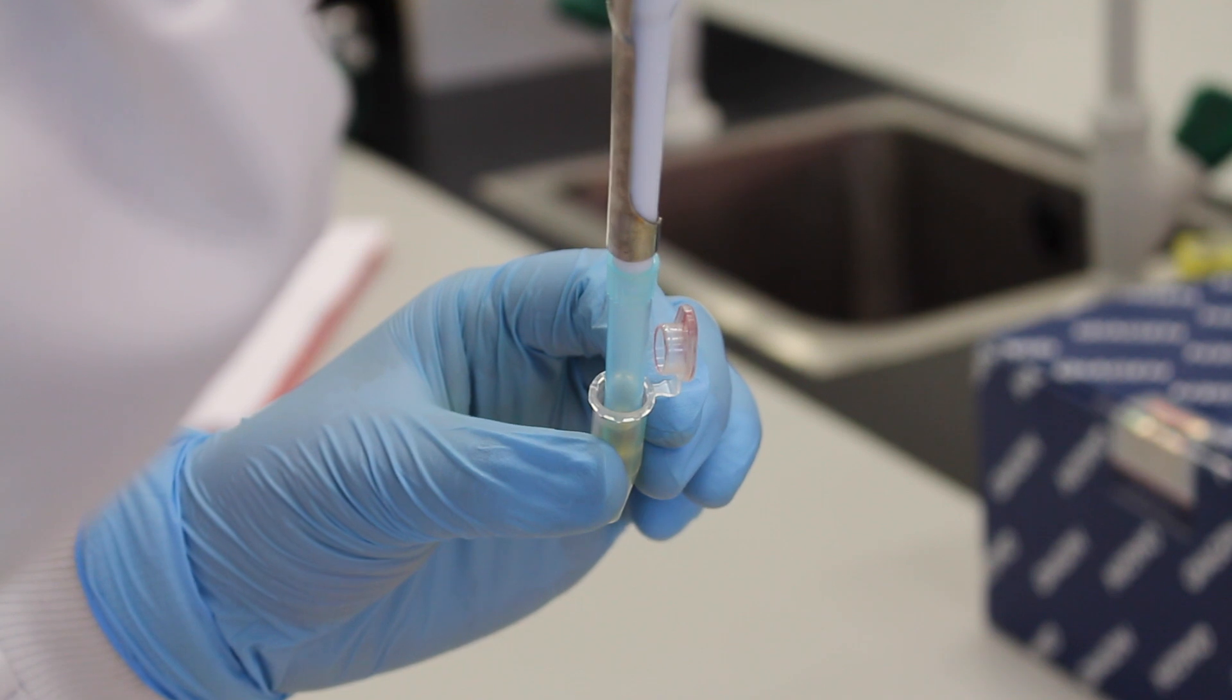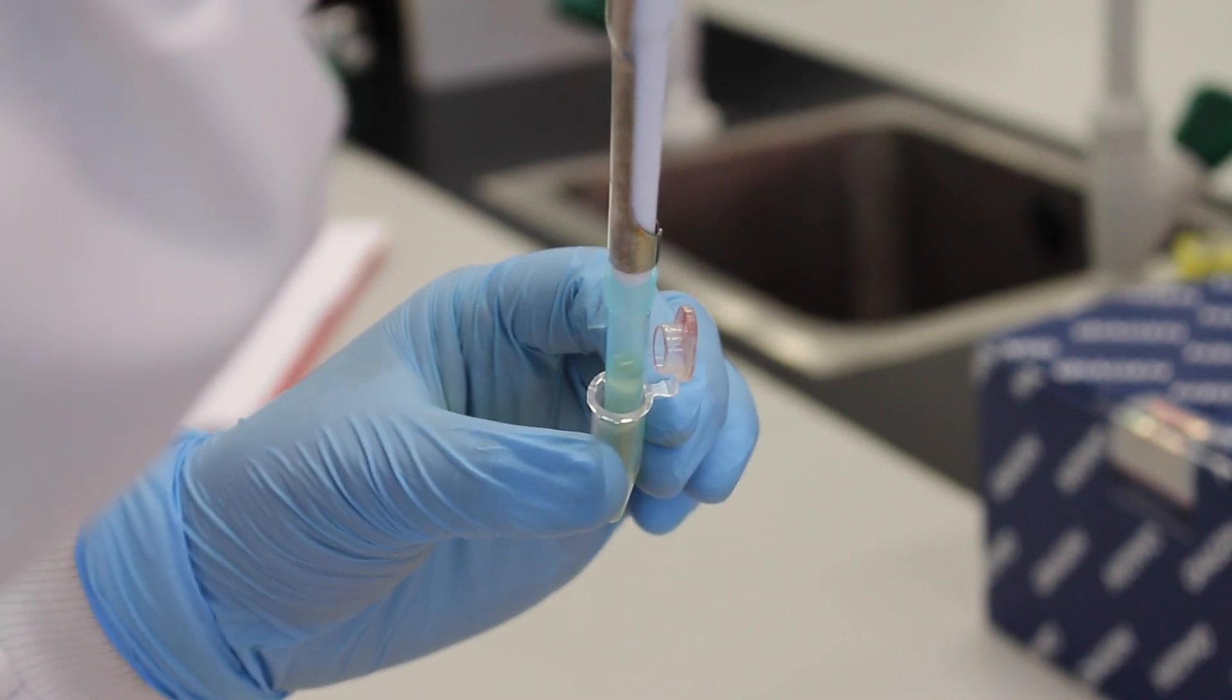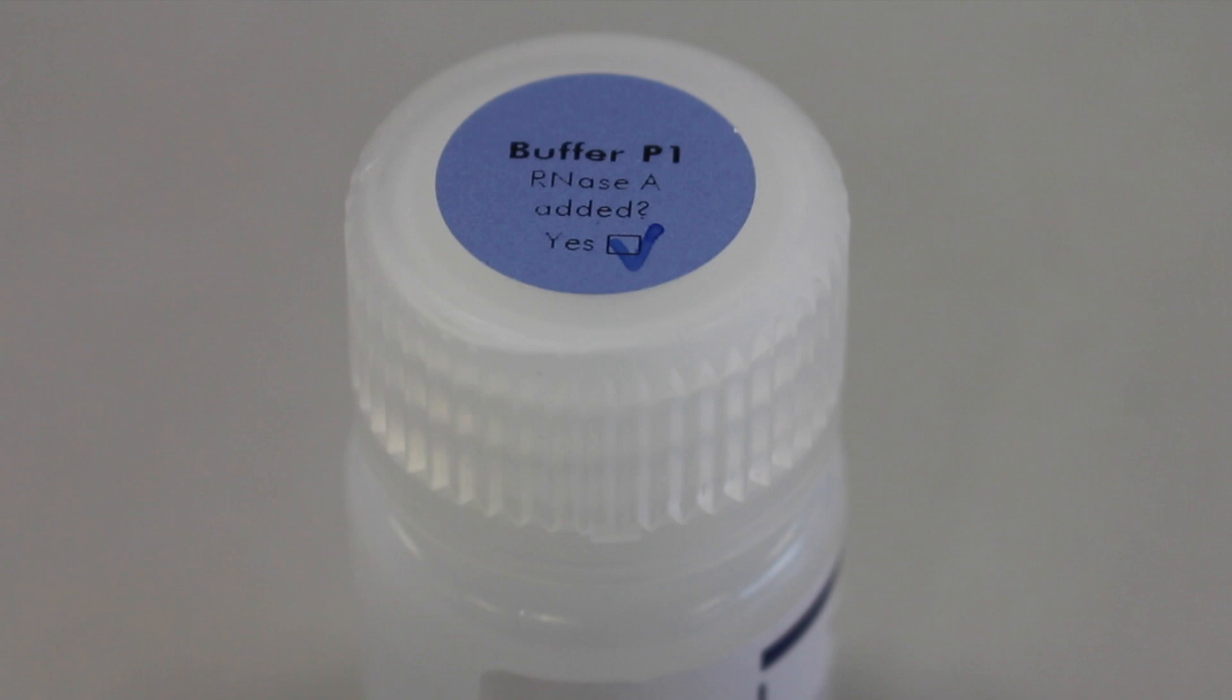The supernatant is carefully removed from each tube. Care is taken not to disturb the pellet. The pellet is then resuspended using buffer P1. Before using the buffer, make sure that RNase A has already been added. RNase will ensure that the cell's RNA is broken down.